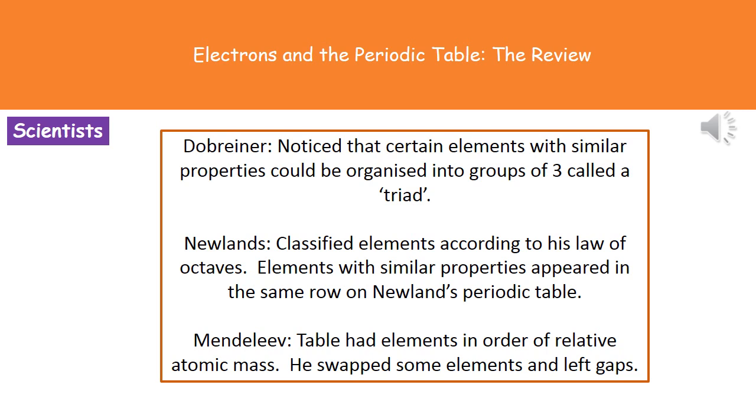So the first one is the scientist called Dobreiner. Now what he actually did was he noticed that certain elements that had certain properties in common could be organized into little groups of three which he called triads. So that was his first version of his periodic table.